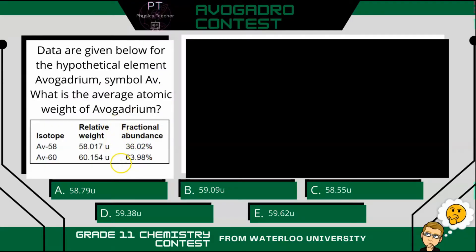This question is a little bit tricky because a lot of people will look at this and go, 'I know how to calculate average.' It's also the second question on the contest, so a lot of students think it's going to be simple. They take the two weights, add them, divide by two, and get 59.09 — and the answer looks right there for B. But that would be wrong.